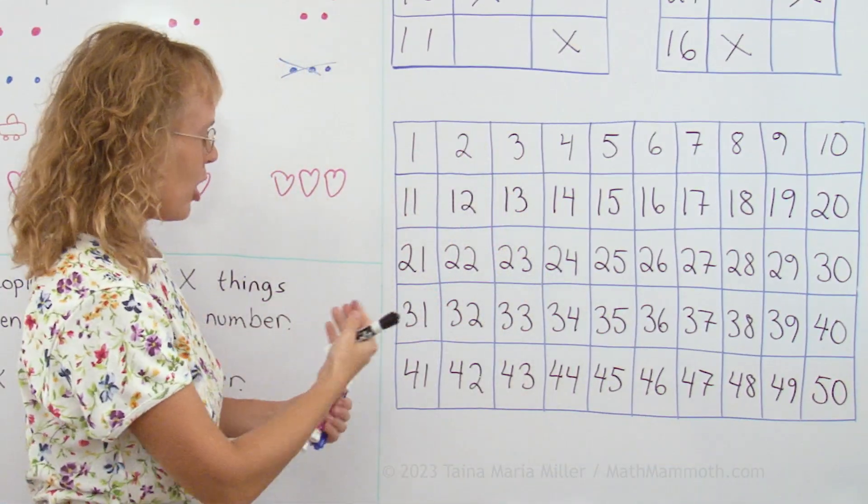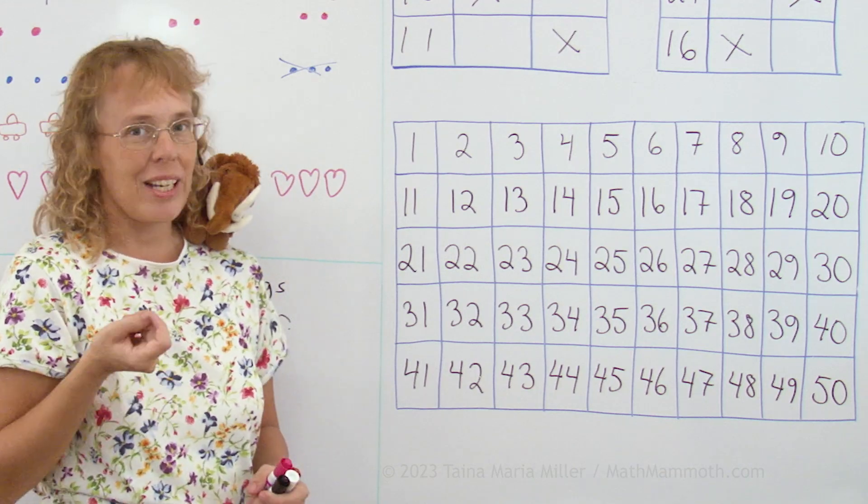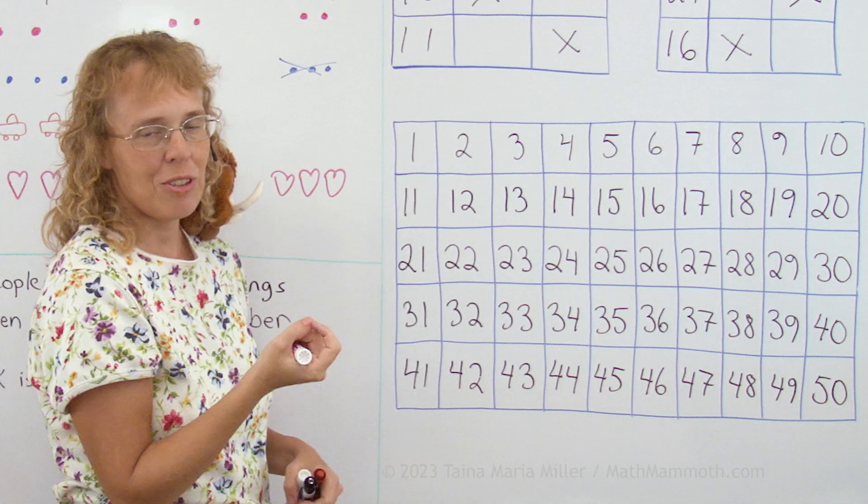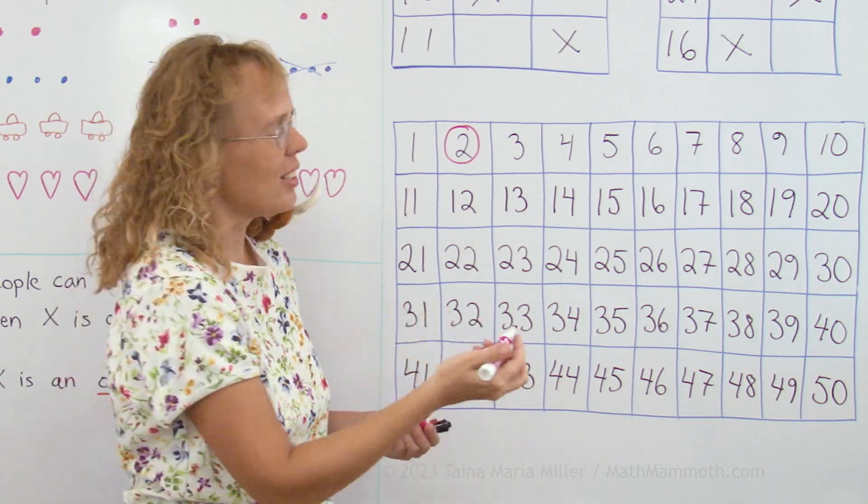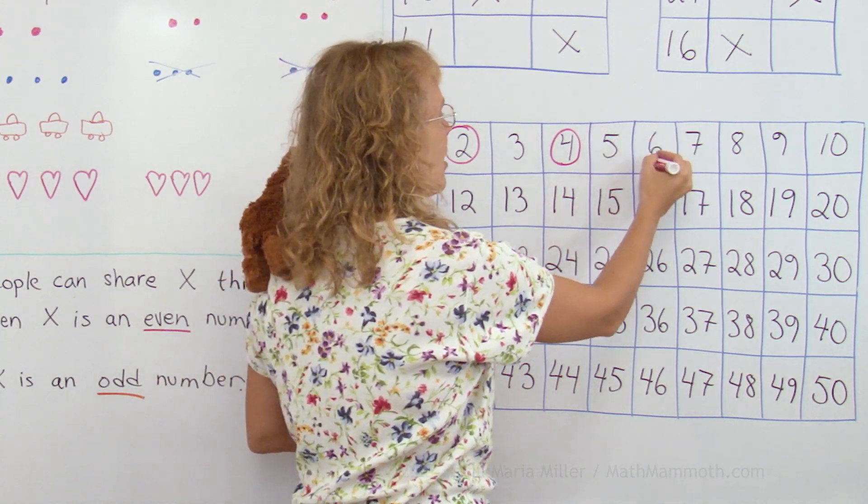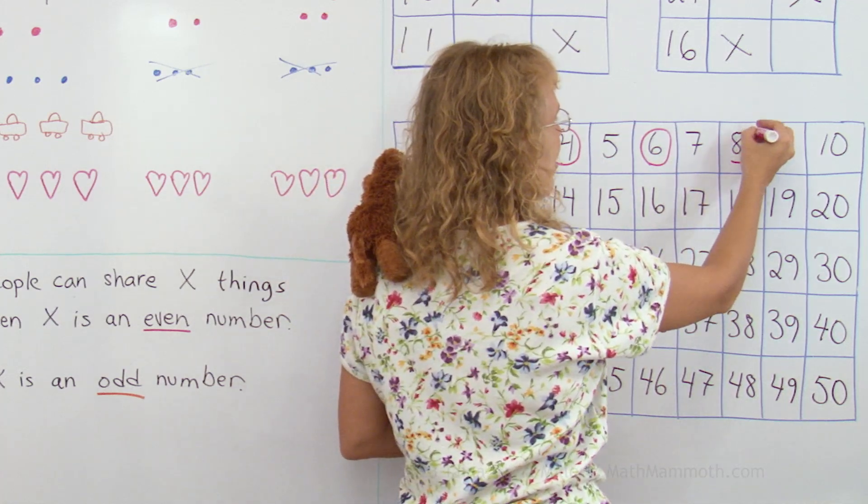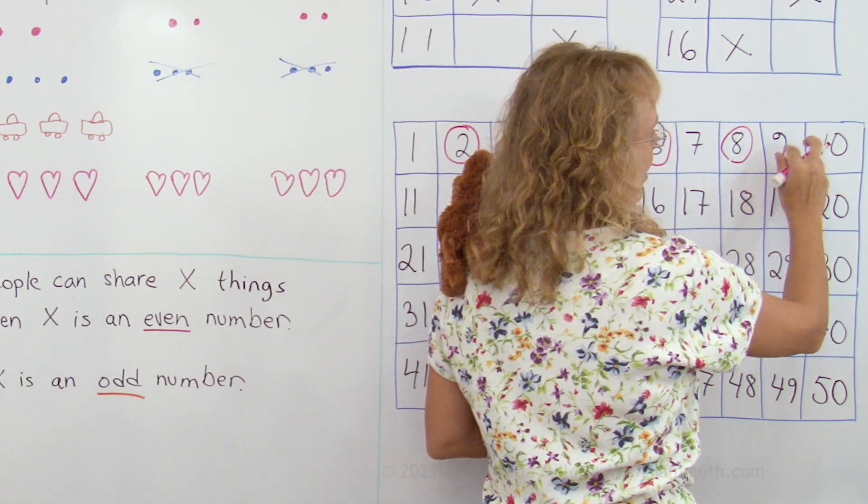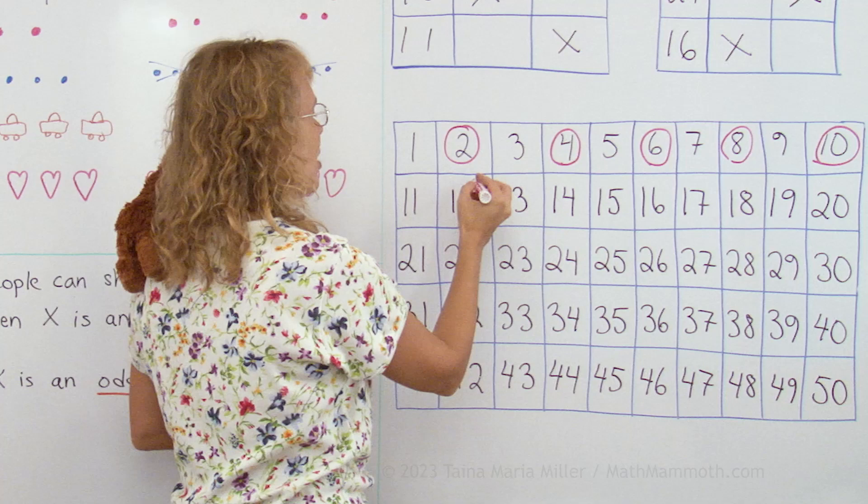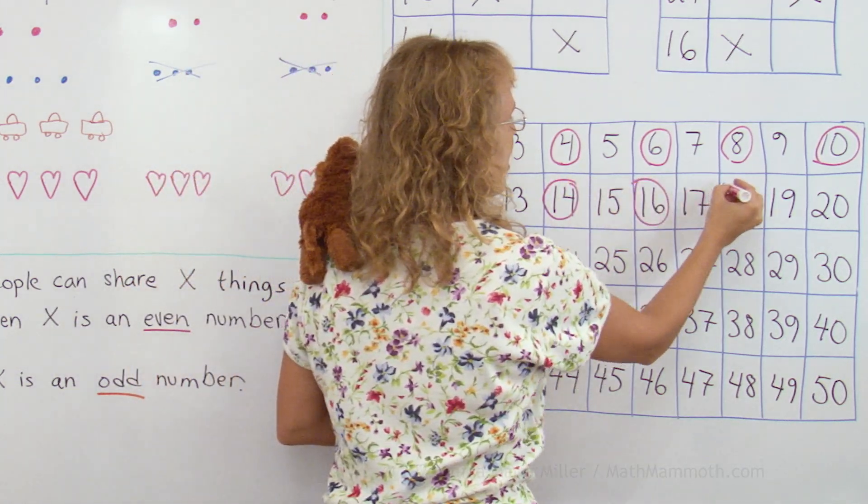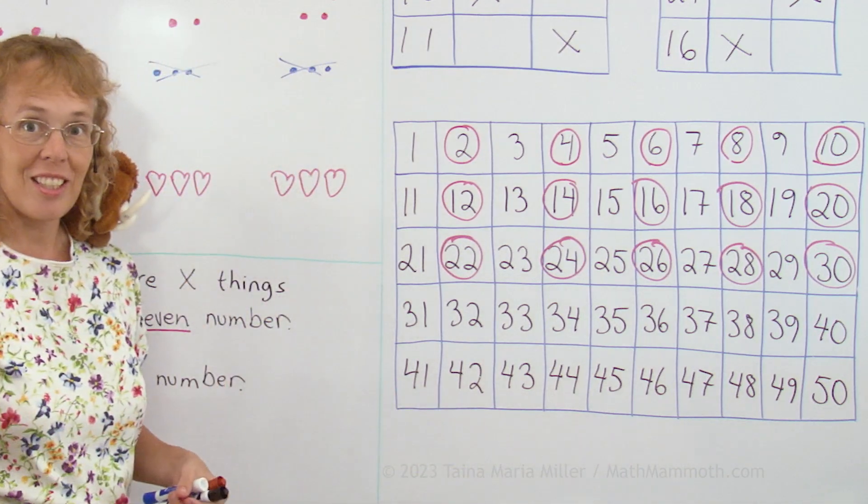Now here I have some of the 100 chart. I wrote it up to 50, a number chart. And now we're going to circle all the even numbers here. So you will see a pattern. First of all, now 1 is an odd number. You cannot share evenly if you have one thing. But 2, you can share evenly two things. 3, you cannot share evenly, right? 1, 2, 3. 4, you can share evenly. 5, you cannot. 6 is an even number. 7 is not, because it's just one more than 6. 8, you can share evenly. 4 and 4. 9, you cannot. 10, you can, because it's 5 and 5. Each person would get 5. And so on, 11 is odd, 12 is even. You see, every other number is an even number. So this is how they go in a pattern. And then of course the ones I'm not circling are the odd numbers.